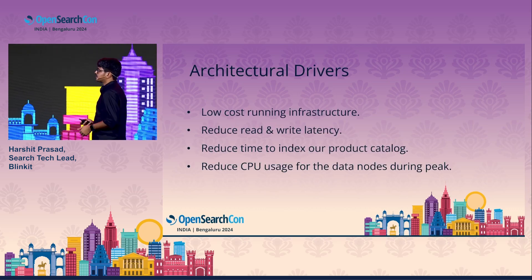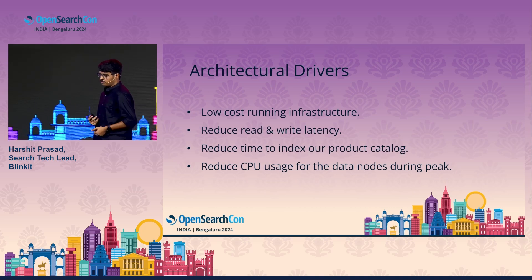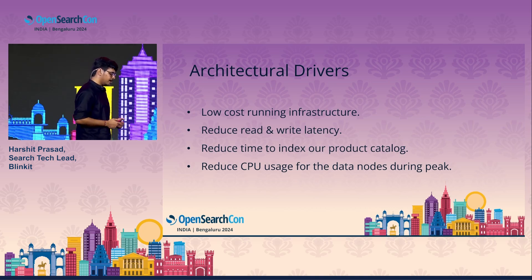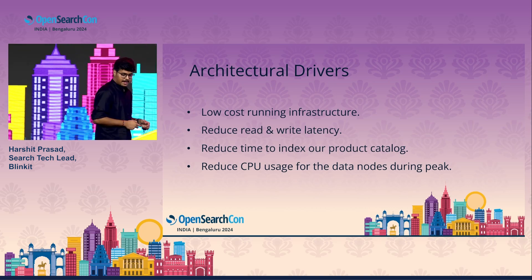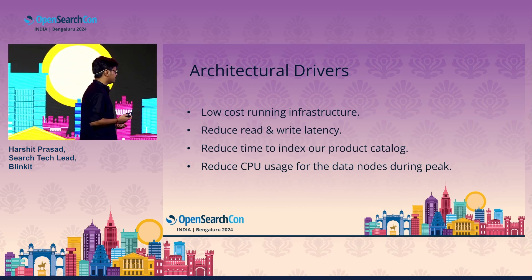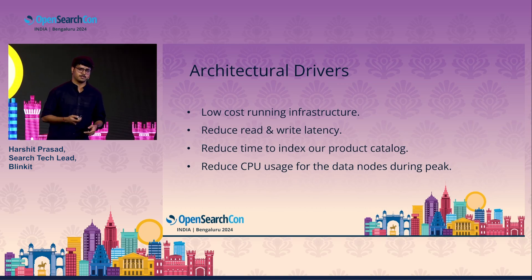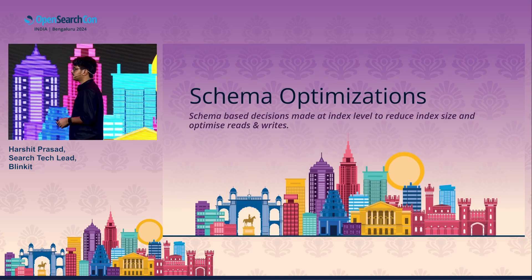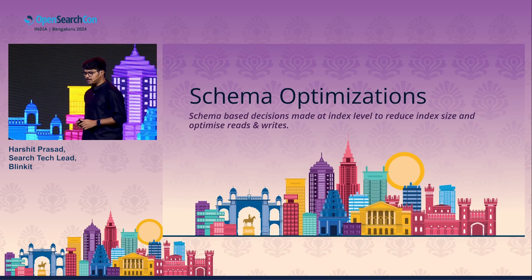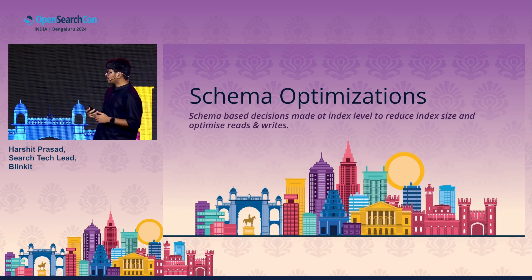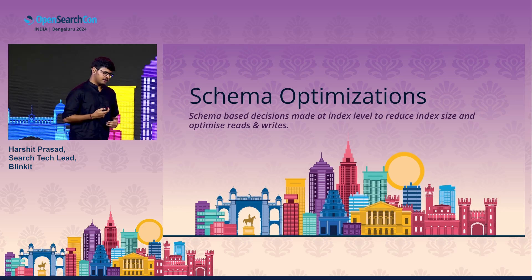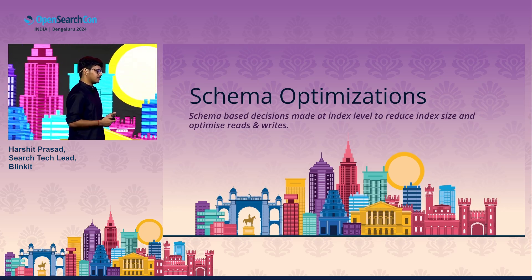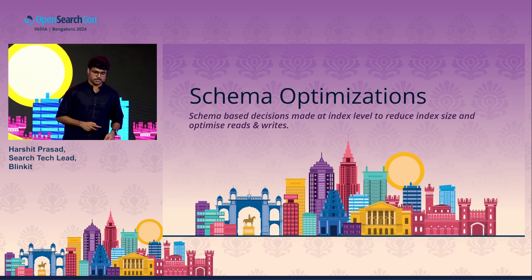These are the main architectural drivers: we wanted a low running cost infrastructure, we wanted to reduce read and write latency, we wanted to reduce the indexing time to create a product catalog, and we wanted to reduce the CPU usage of the data nodes during peak. Coming to schema-level optimizations — these were the optimizations we did to reduce index size, make writes faster, and make reads much faster.